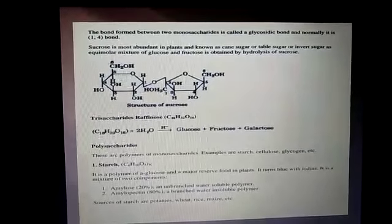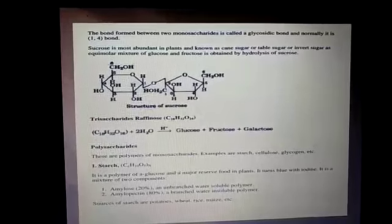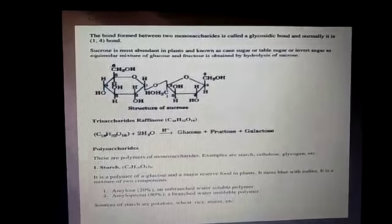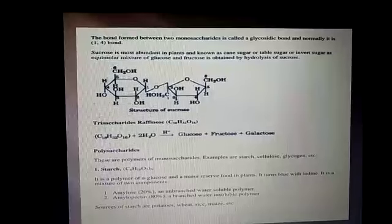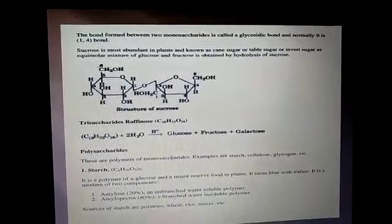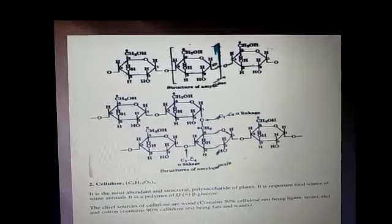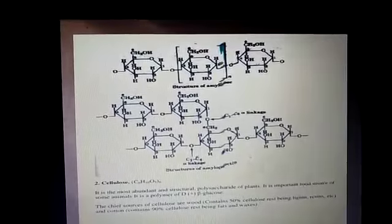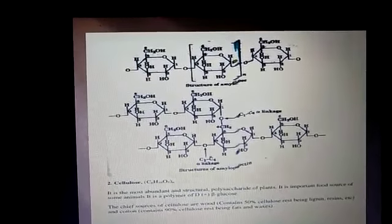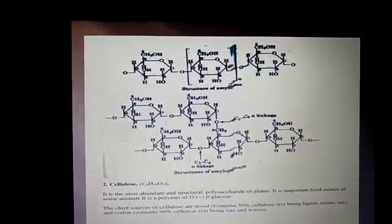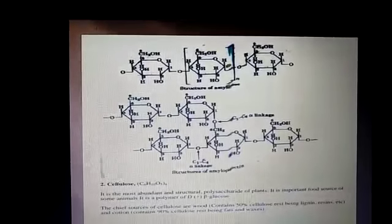Amylose is a water-soluble component, constituting about 20 to 50% of the starch. Chemically, amylose is a long, unbranched chain with 200–2000 units of alpha-D-glucose, held by C1–C4 glycoside linkage. Amylopectin is insoluble in water and constitutes about 80 to 85% of the starch. It is a branching polymer of alpha-D-glucose units in which the chain is formed by C1–C4 glycoside linkage, whereas the branching occurs at C1–C6 glycoside linkage.